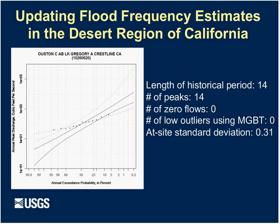Here are two extreme flood frequency plots illustrating what we were up against. Using the EMA method and the multiple Grubbs-Beck test to identify low outliers, the red line shows the flood frequency estimate using only at-site information, while the black line shows the LP3 estimate using the weighted regional mean, standard deviation, and skew. The first example is a short-record site with no zero flows. Although there were low outliers, it had very little variability — a standard deviation of only 0.31 — so the regional weighting in the black line effectively outweighed most of the at-site information.